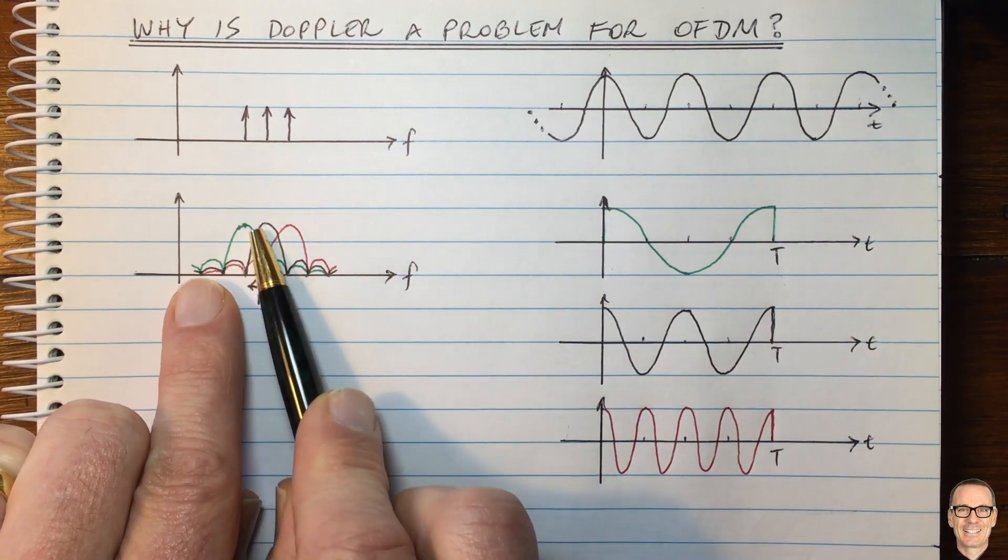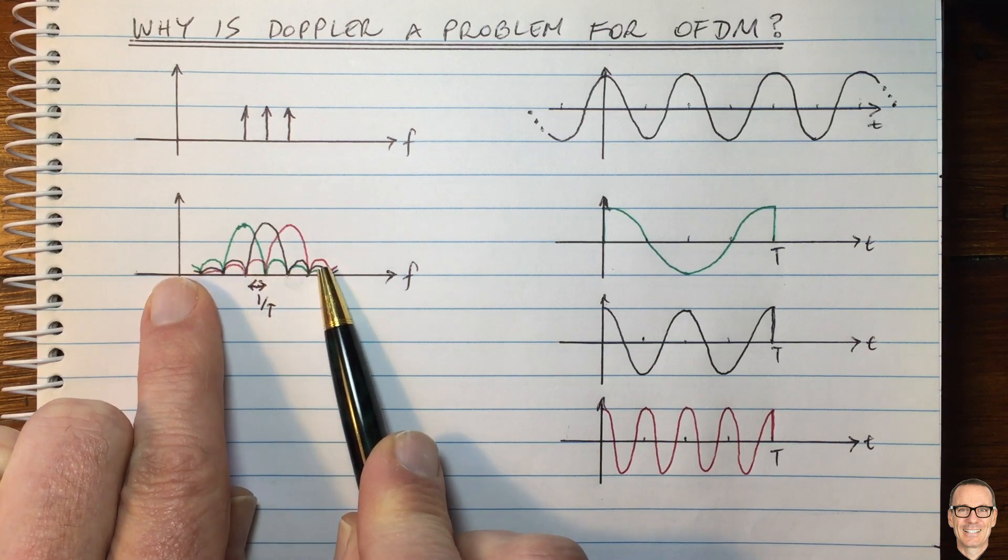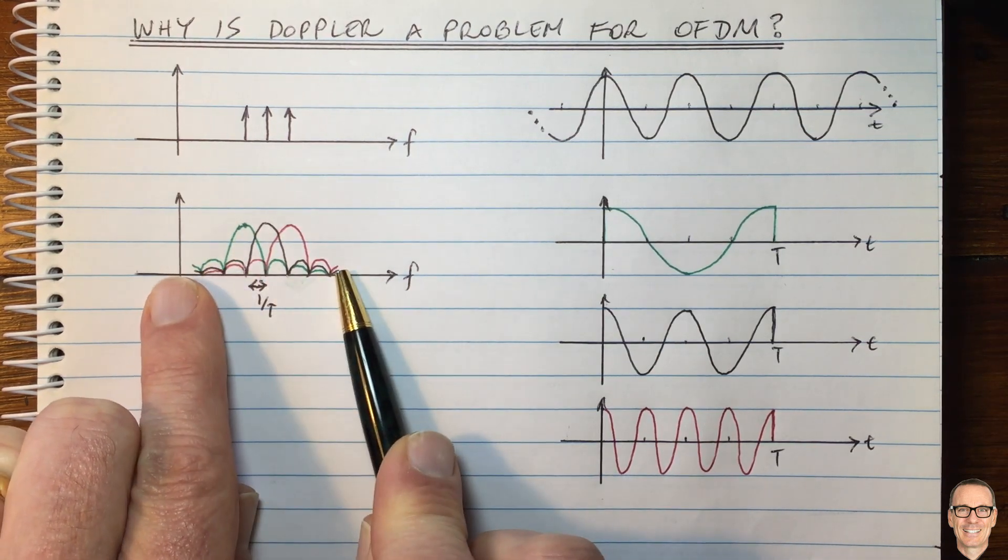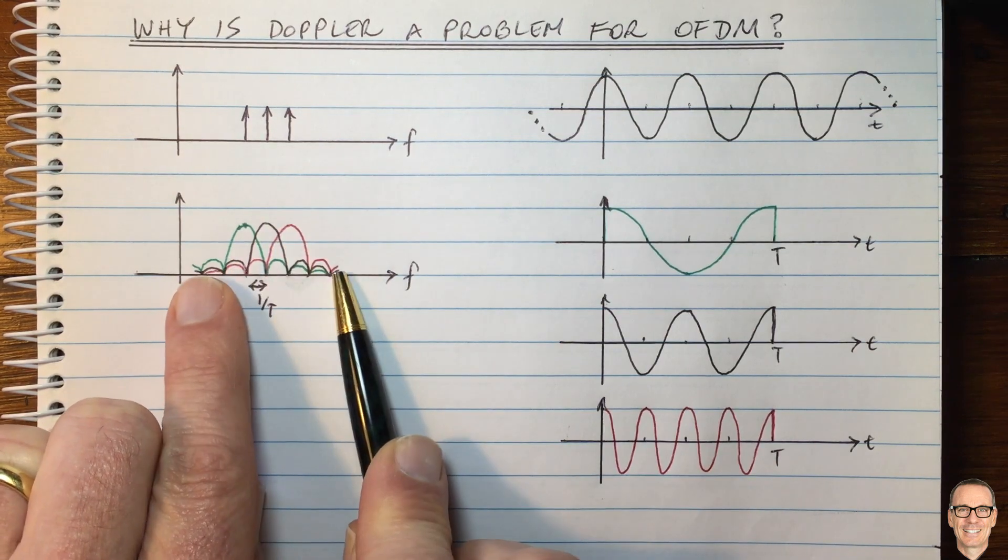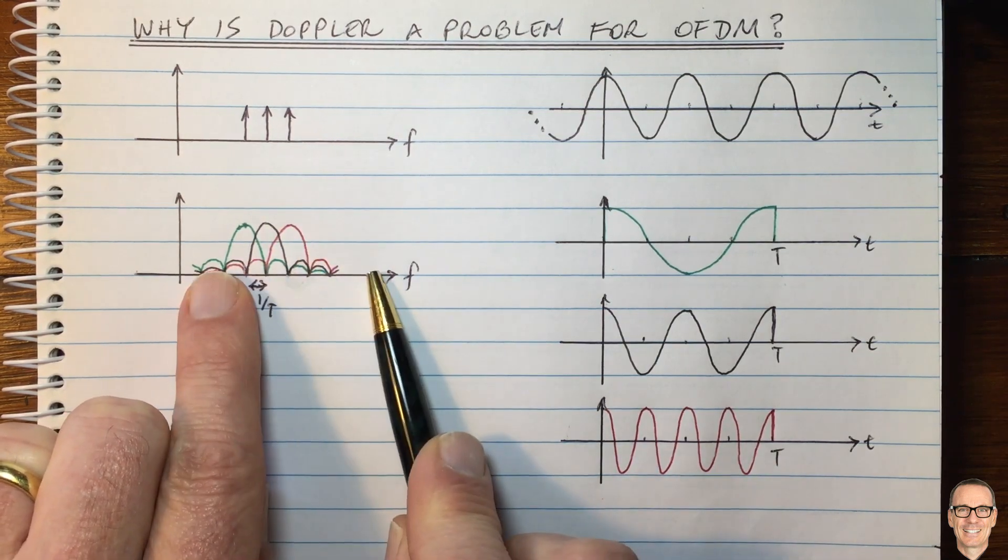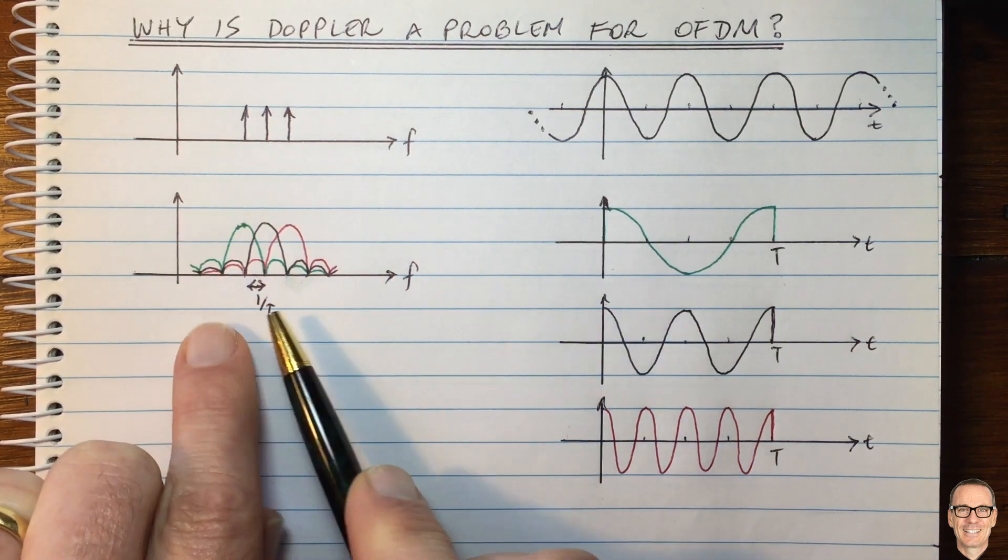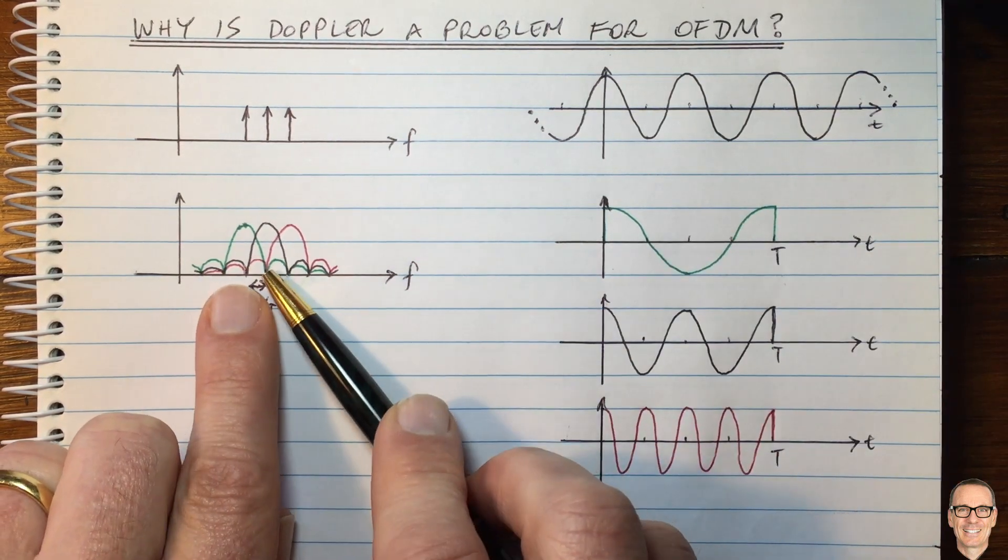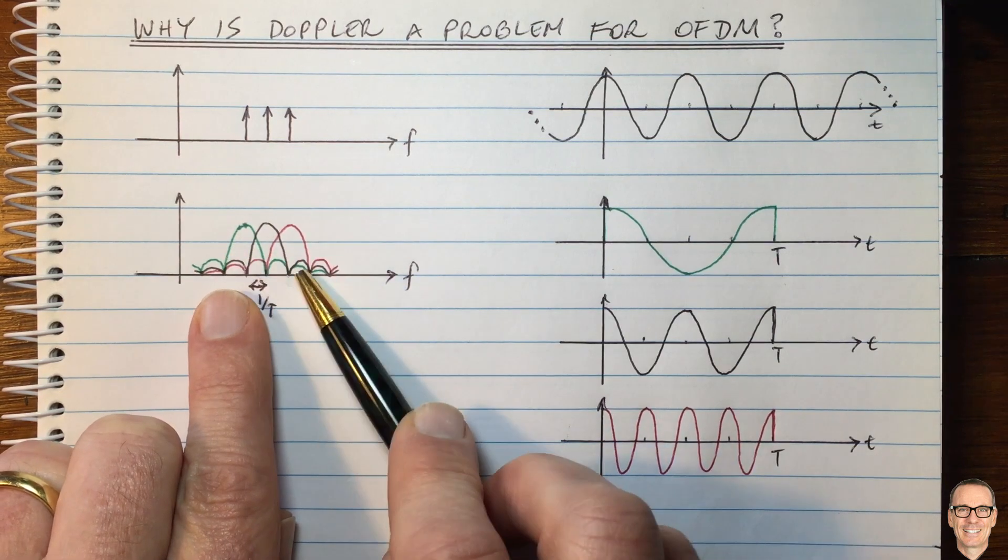So even though in the frequency domain, they occupy all across the band, so the green waveform occupies all across the band, the black one also occupies all across the band, and the red one occupies all across the band, because we've chosen them in this clever way, they can be recovered and extracted from each other, even though they overlap.